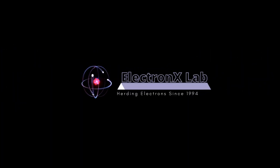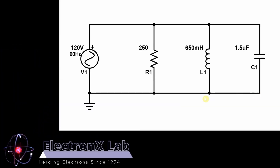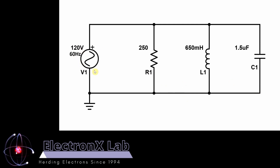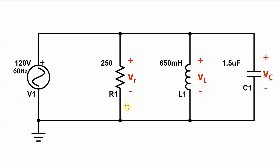Welcome to the Electronics Lab. In this video, I'm going to analyze this parallel RLC circuit that has a 120 volt, 60 hertz AC signal connected to it. For this analysis, I'm going to calculate the voltages across the resistor, inductor, and capacitor, which is of course the same as the source voltage because these components are all in parallel.